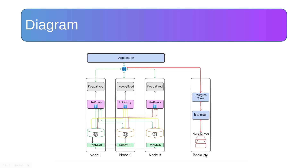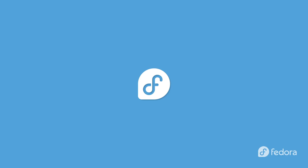We also have a backup server. On the backup server we have storage, a Barman server, Barman CLI, and a PostgreSQL client. The PostgreSQL client is important to connect to PostgreSQL for management, monitoring, and streaming. That is the diagram overview in general. In upcoming videos we will cover each part separately and show the configuration in more detail. I hope you guys find this series informative — take care and I will see you all next time.